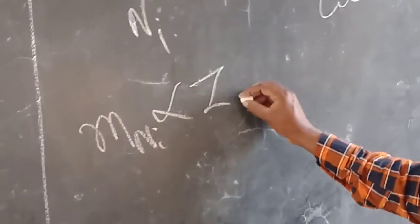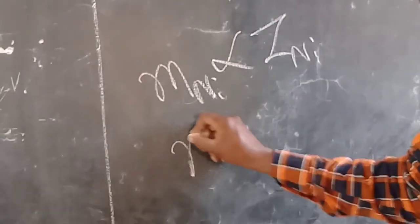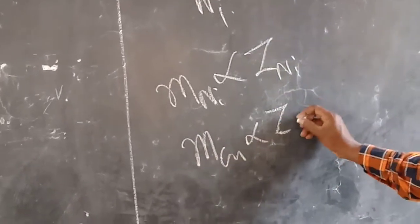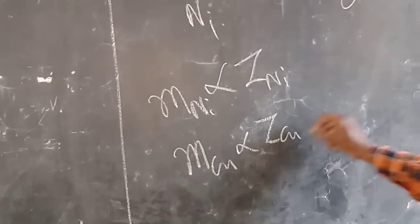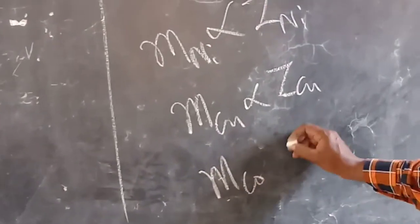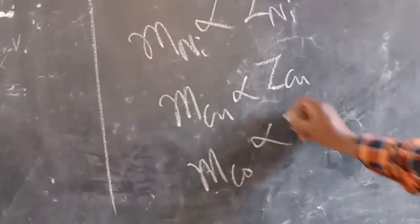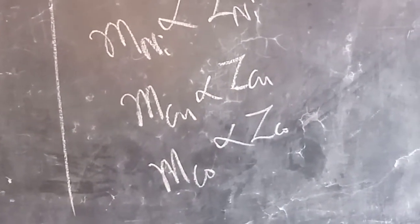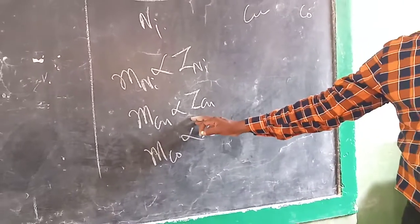The copper deposit is proportional to the electrochemical equivalent of copper. The mass of the cobalt is proportional to the electrochemical equivalent of cobalt. This is the first law.